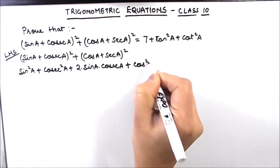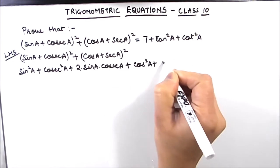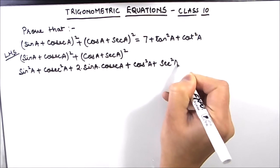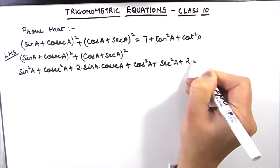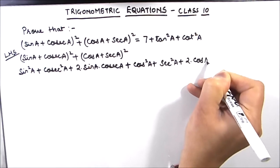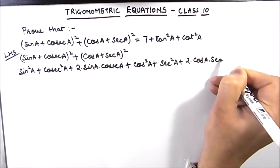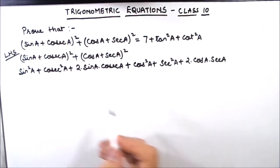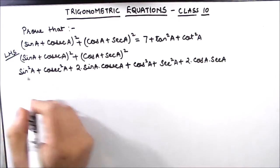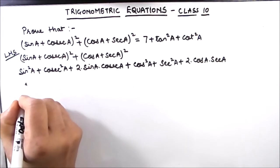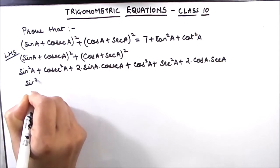Plus cos² A + sec² A + 2 times cos A times sec A. Now we will rearrange the terms. So sin² A + cos² A, we will take and write it together.